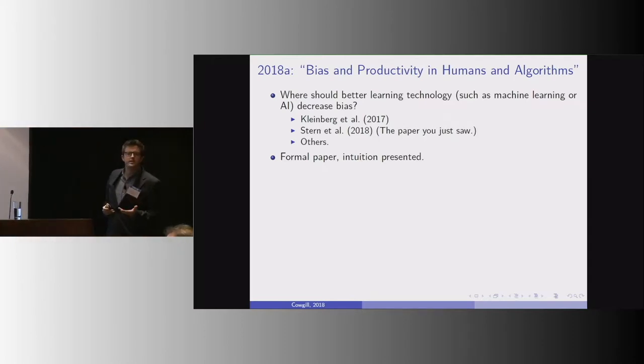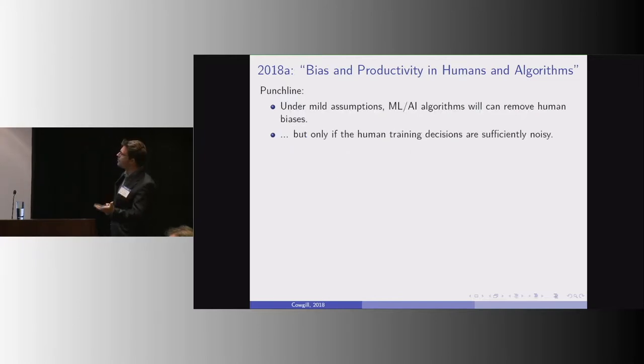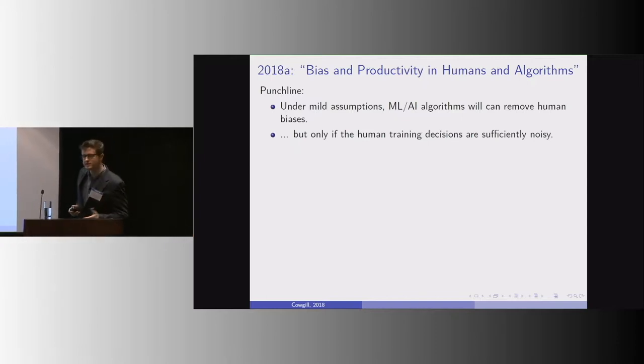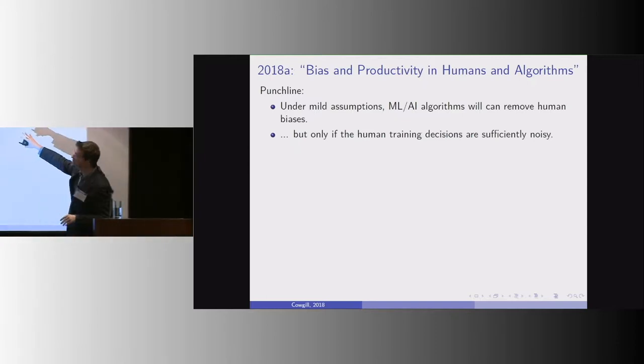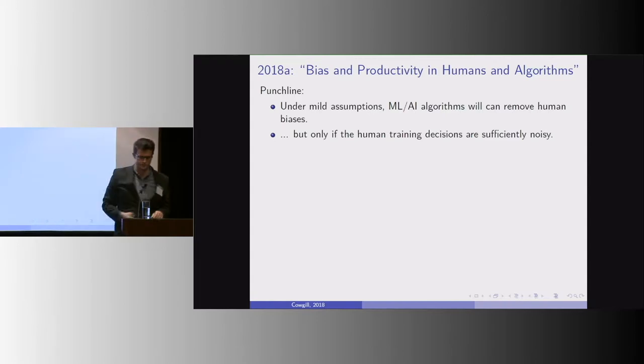So I'll just briefly present the intuition of this paper before talking about some results. So the punchline is that under mild assumptions, machine learning can remove biases, but only if the training decisions are not just biased, but also sufficiently noisy.